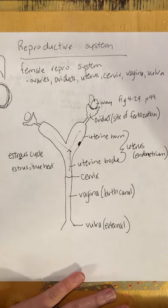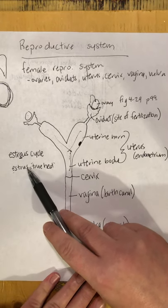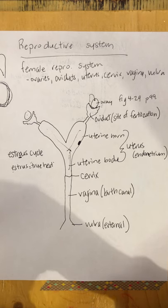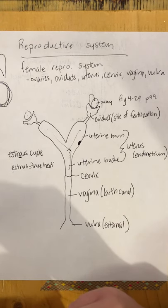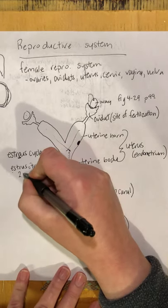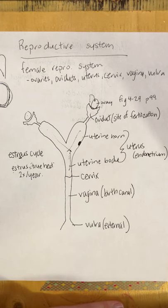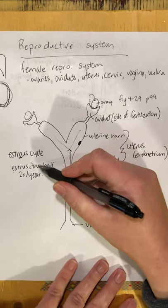When dogs are in this true estrus they're ovulating, and they ovulate regardless of whether they've been mated or not. If they get mated and result in a pregnancy, great; if not, the estrus goes away and they continue along their cycle. Dogs tend to come into estrus twice per year, giving them the potential for two litters per year. Dogs are different from humans in that when they're passing blood during their heat, that's actually when they're at their most fertile.